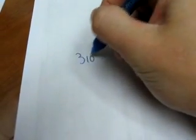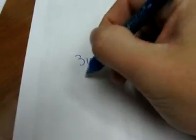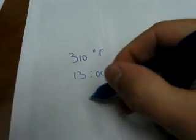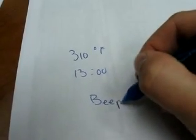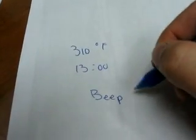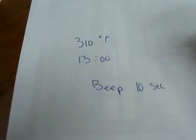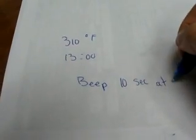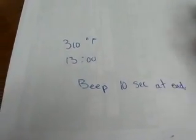By example, if you want to bake a cookie at 310 degrees for 13 minutes and then you want to beep for 10 seconds at the end of the operation, you can use that programming sheet.